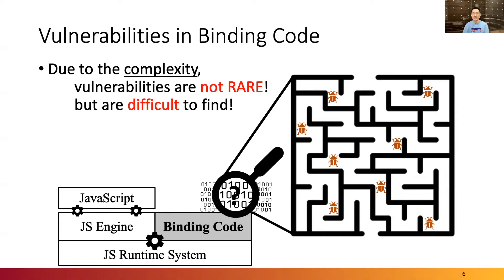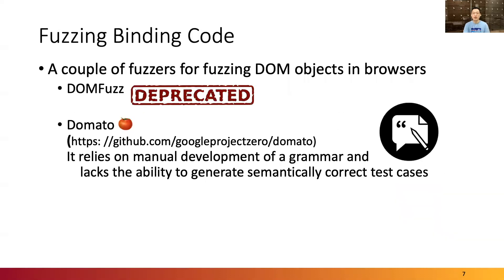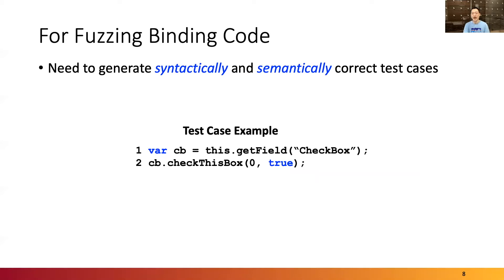Therefore, there is a pressing need to design JavaScript fuzzers to effectively find bugs in the binding code. A couple of fuzzers, such as Domato, have been used for fuzzing DOM objects of web browsers. Domato revealed some severe vulnerabilities, but it relies on manual development of a grammar file to generate test cases. Therefore, Domato cannot avoid huge manual efforts for fuzzing each binding code. Also, even with the grammar file, Domato lacks the ability to generate semantically correct test cases.